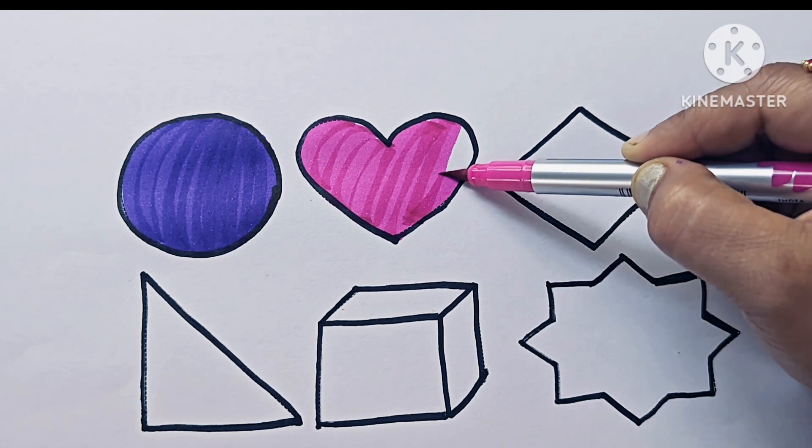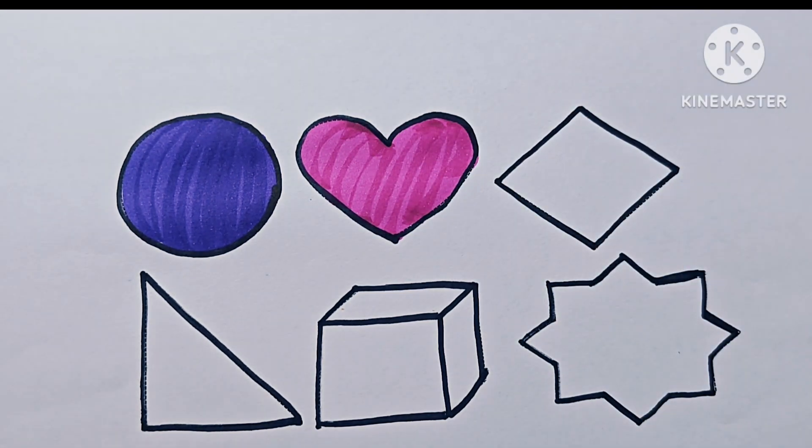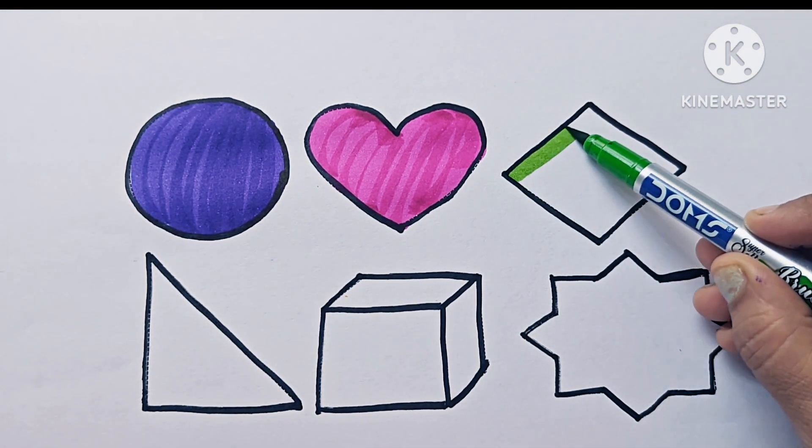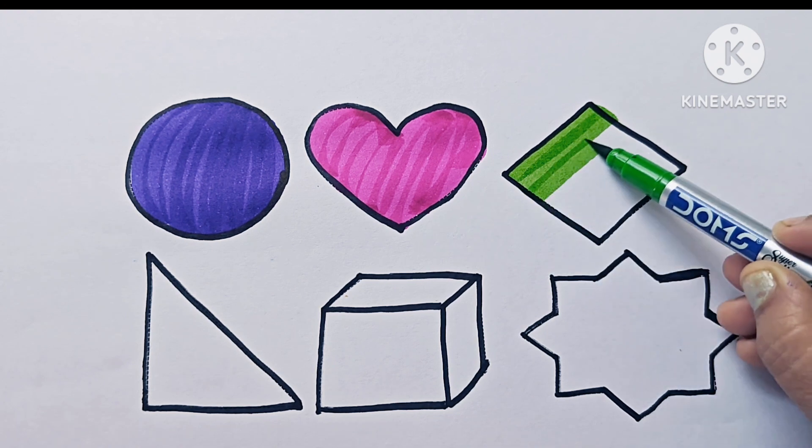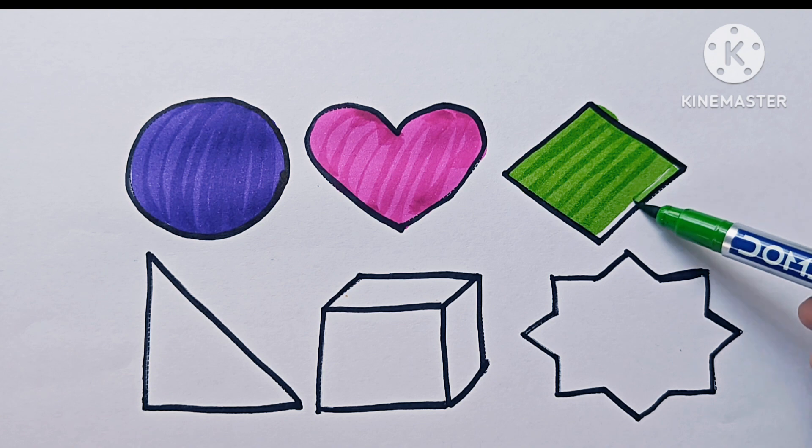This is a shape. Light green. This shape is rhombus, also called diamond. It has 4 sides, 4 vertices, 4 angles.